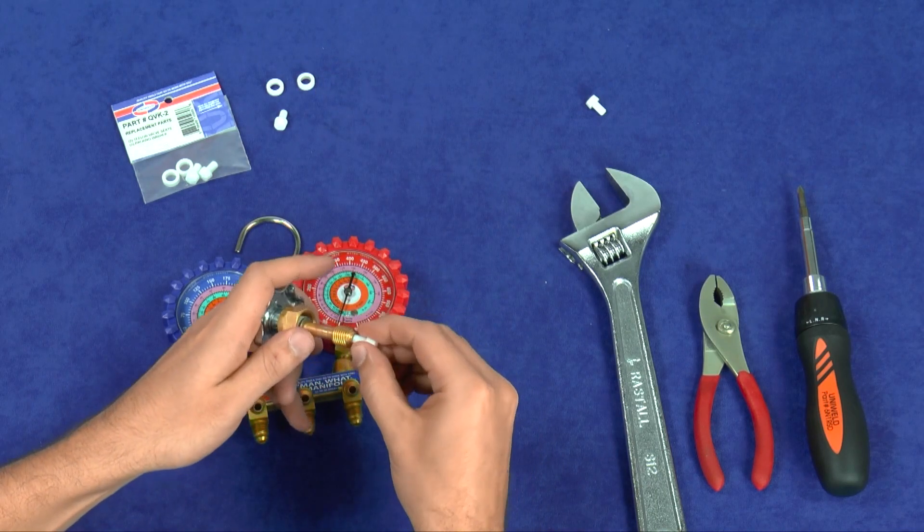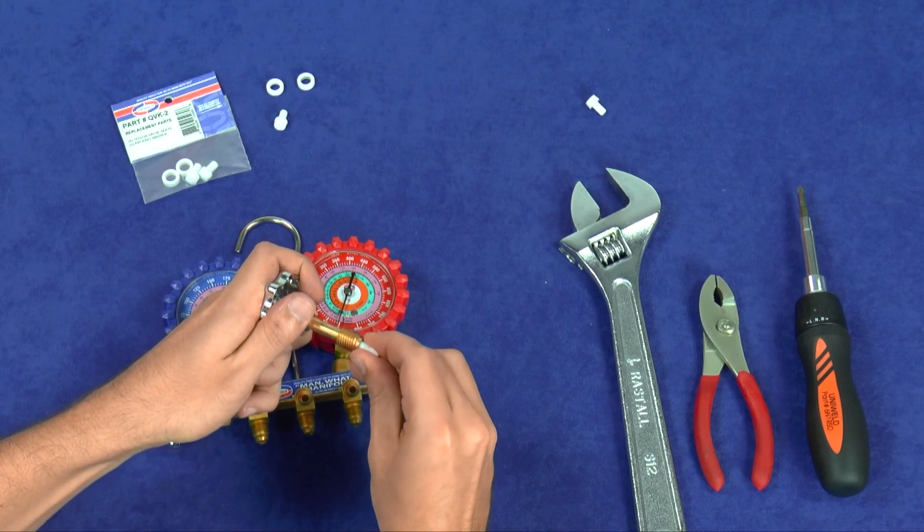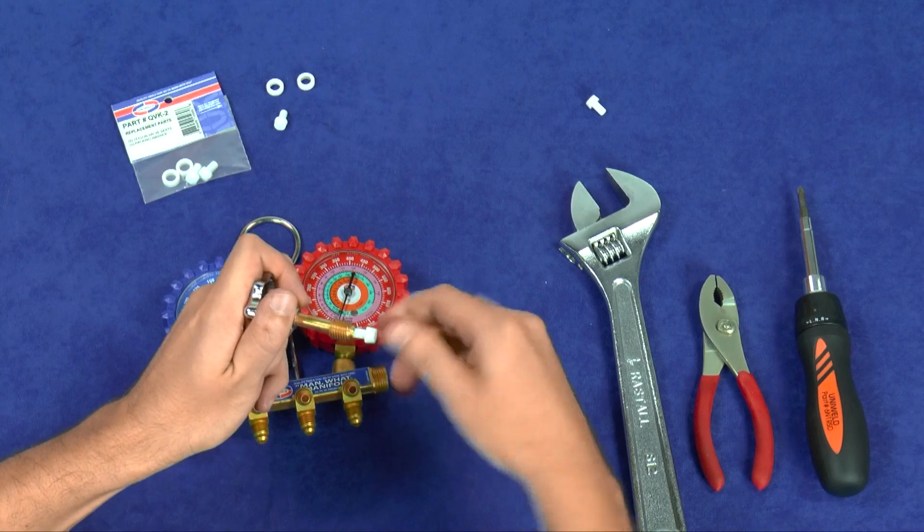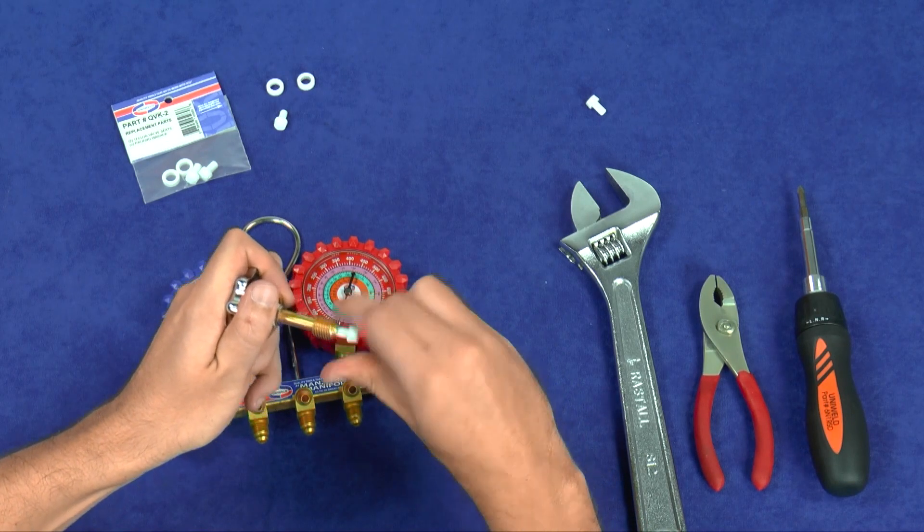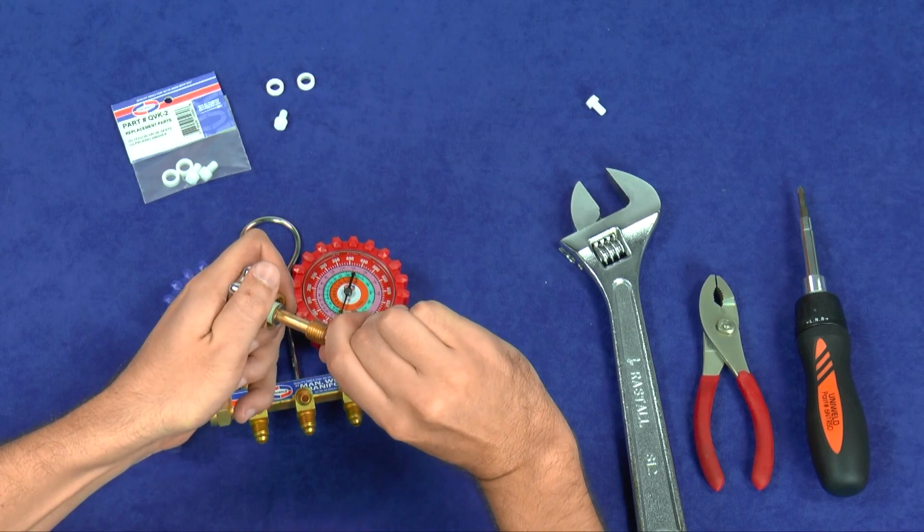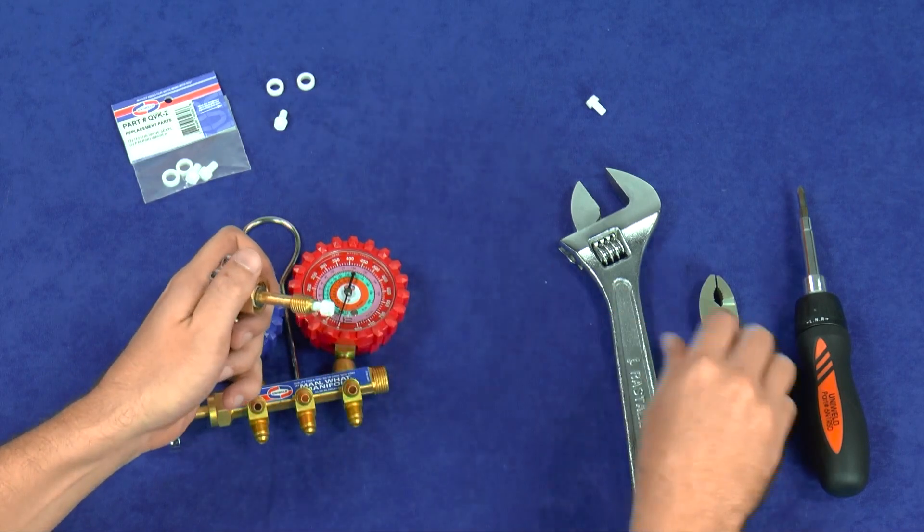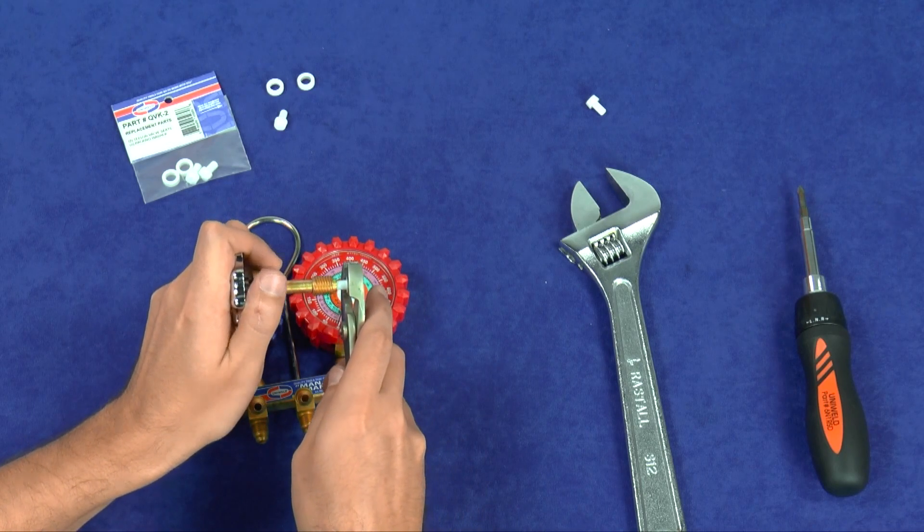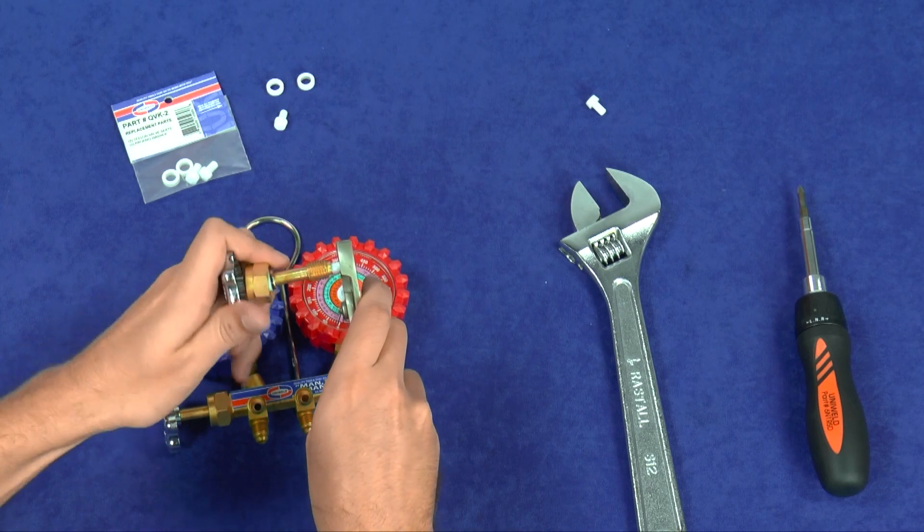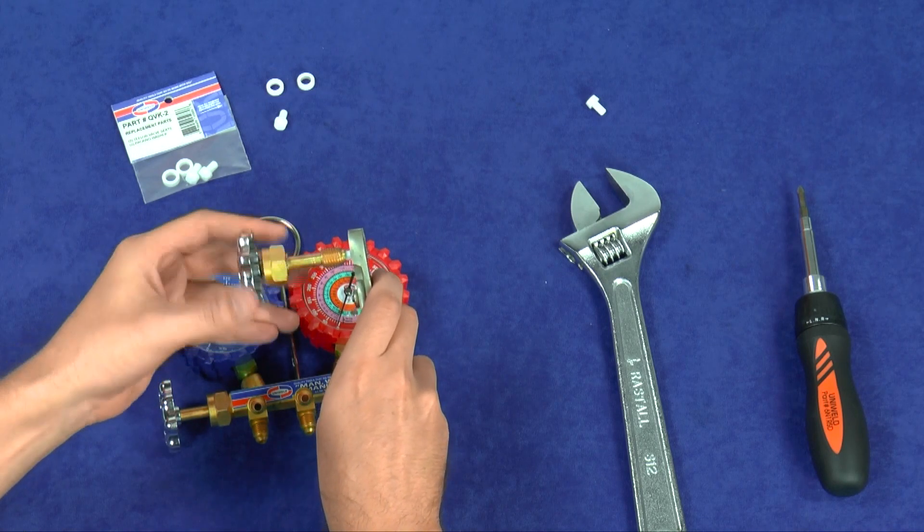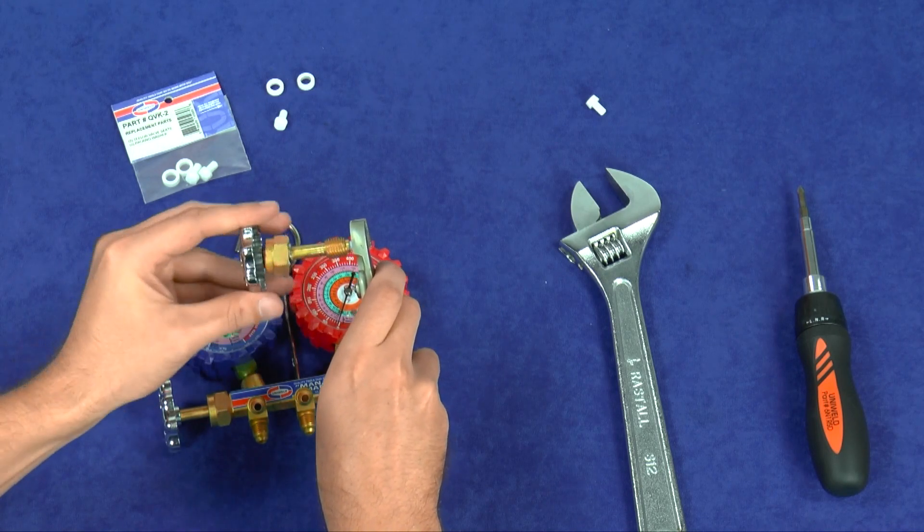The new Teflon seat does not have threads. It is self-tapping, so be sure to thread it straight into the end of the brass stem. Use pliers to fully screw in the Teflon seat. Be careful not to squeeze the pliers too tightly, as this can score the Teflon and prevent it from sealing properly.